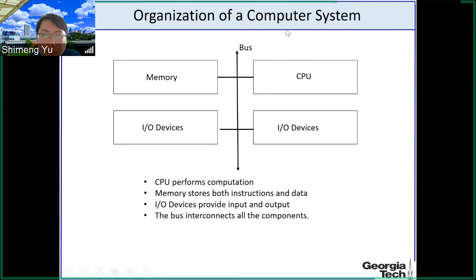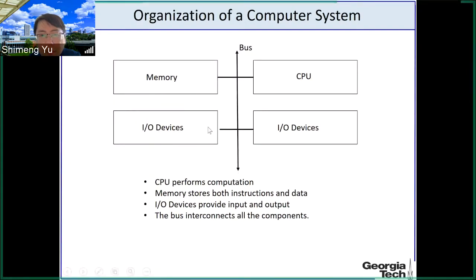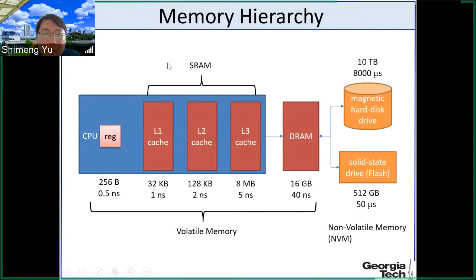The complete system may also have I/O devices such as a keyboard, speaker, and monitor. Data is transferred through the data bus between different components of the system. Now we are going to look at the memory subsystem in more detail. The memory subsystem actually has a hierarchy made of different memory technologies.